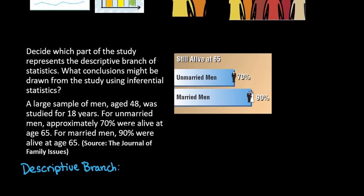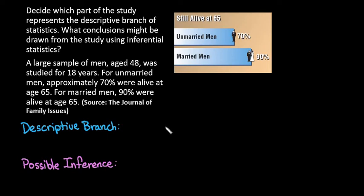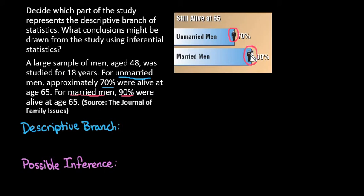Let's look at this question: decide which part of the study represents the descriptive branch and what conclusions might be drawn using inferential statistics. A large sample of men aged 48 was studied for 18 years. For unmarried men, approximately 70% were alive at age 65, and for married men, approximately 90% were still alive at age 65. There is also a display of that information — for unmarried men they used a single person, and for married men you can see a bride, so you can visually see what is being compared.